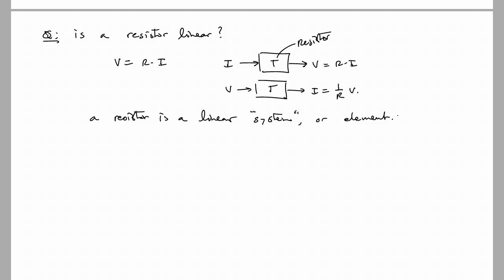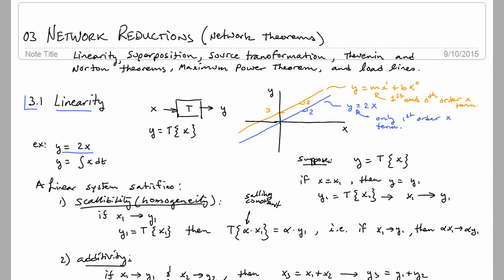And furthermore, we'll be able to say that when we study capacitors and inductors, although they involve an integral or a derivative, it turns out that taking the derivative or taking the integral is also a linear operation, meaning that it satisfies scalability and it satisfies additivity. And so capacitors and inductors as well as resistors are all linear elements. And if we study networks that are made up of capacitors, resistors, and inductors, we are studying a linear system, and we can take full advantage of the linear tools that we will be developing. The rest of this lecture on network reductions actually is based upon the fact that we are studying linear systems. If we weren't, we couldn't do source transformation, we couldn't do superposition, we couldn't do Thevenin or Norton theorem, et cetera.